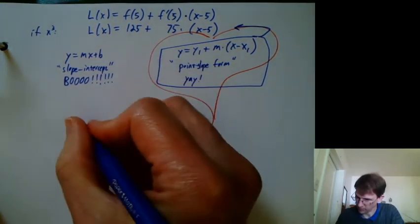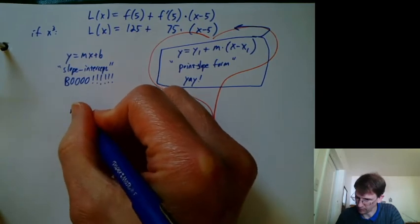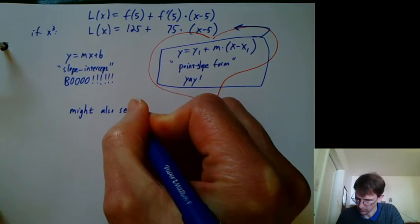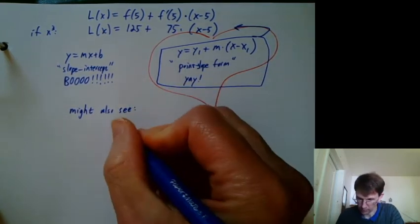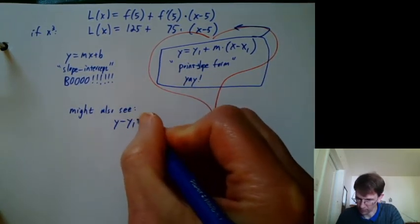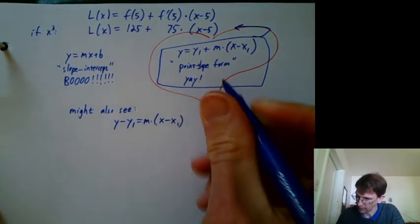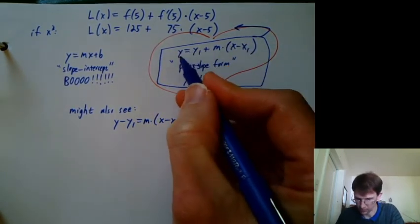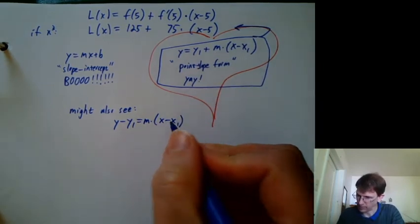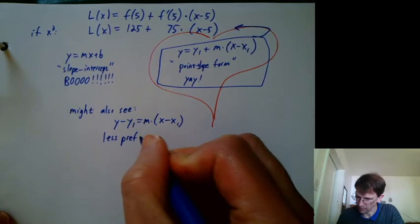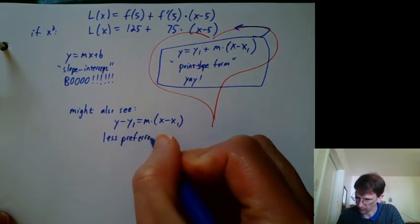Another form you might also see that we can talk about, and some people were taught this as point-slope form: y minus y1 equals m times x minus x1. It's basically this, but with the y1 moved over here. I'd say that's still true, but it's less preferred. It'll come up in chapter 4.4.